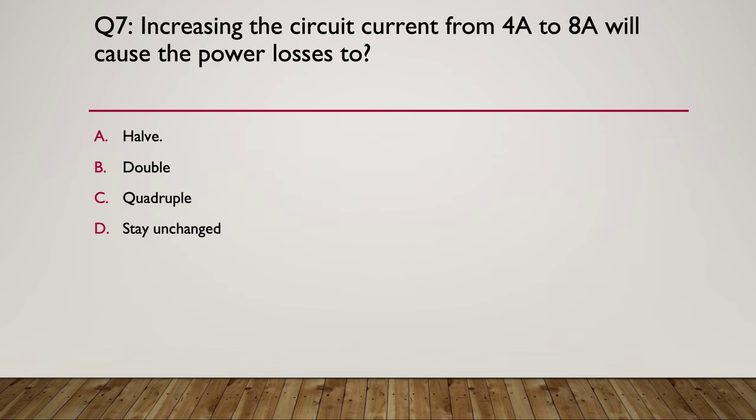Question seven: increasing the circuit current from four amps to eight amps will cause the power losses to — A) halve, B) double, C) quadruple, or D) stay unchanged. Pause here.